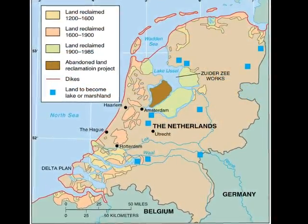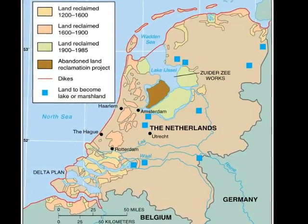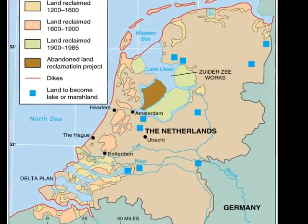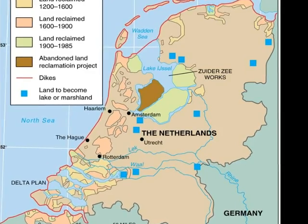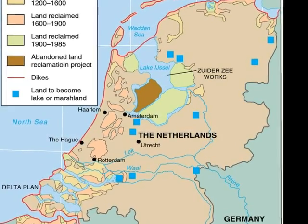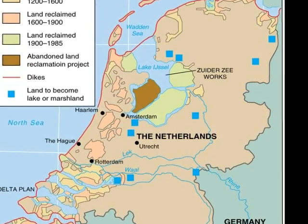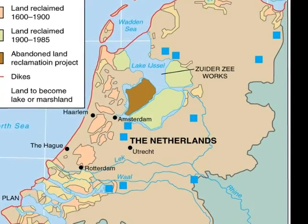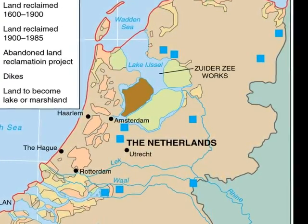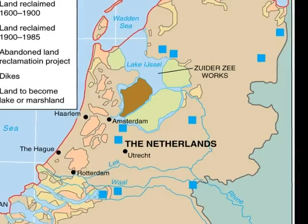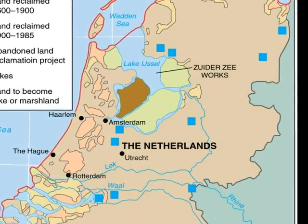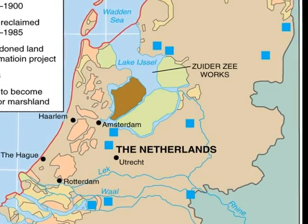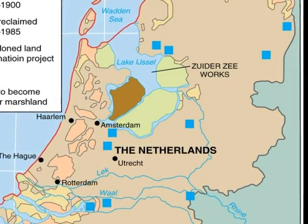Few regions have been so thoroughly modified by human beings as the Netherlands. Because more than half of the Netherlands lies below sea level, most of the country today would be underwater if not for massive projects to hold back the sea. This is an excellent example of possibilism — human beings made choices to alter their environment, and their culture has left its stamp on the Netherlands.